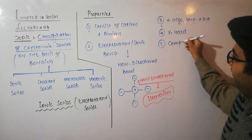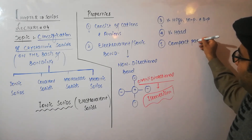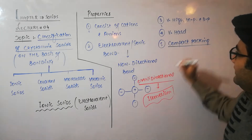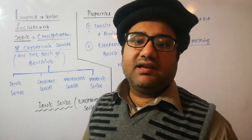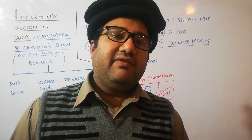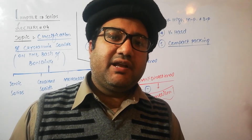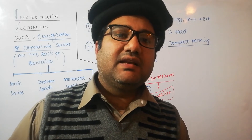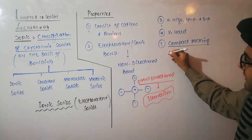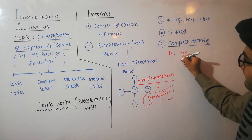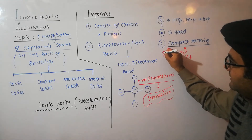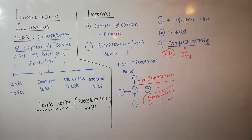Ionic solids have very compact packing, meaning the empty spaces between the cations and anions are very small. When any solid has compact packing, its lesser volume has greater mass, which means the density will be quite high — because in a lesser volume there is greater mass. So ionic solids have very high density.